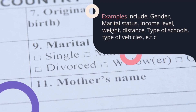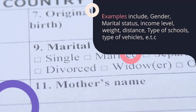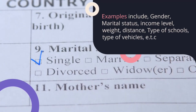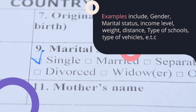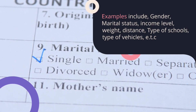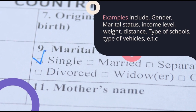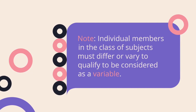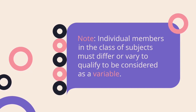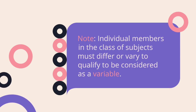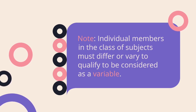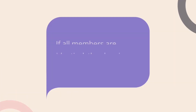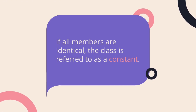From the above characteristics, examples of variables include marital status, income level, and gender. For example, when we say gender, it has two values — someone can either be male or female. Individual members in a class of subjects must differ or vary in order to be called a variable, because if all members are identical, the class is going to be referred to as a constant.